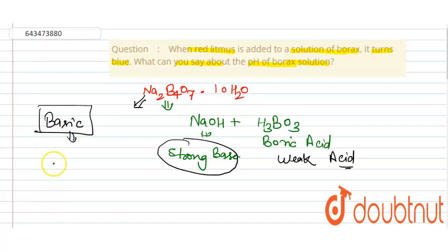As we know, solutions which are basic in nature have pH greater than 7. Also, in this question it is mentioned that red litmus changes to blue, which confirms it is basic in nature.